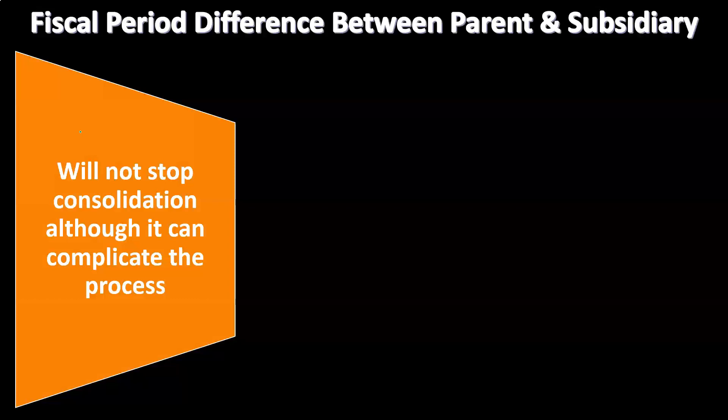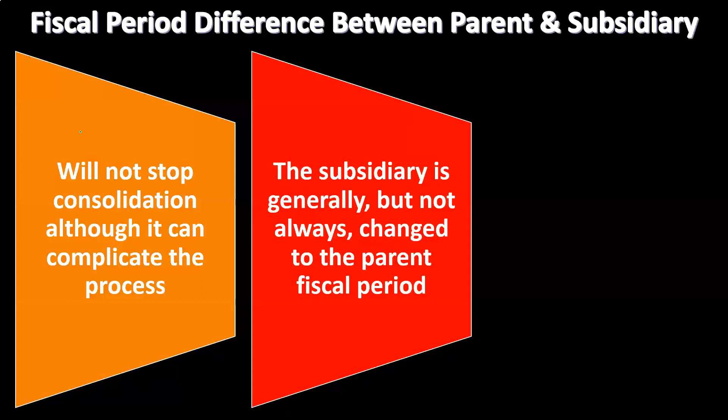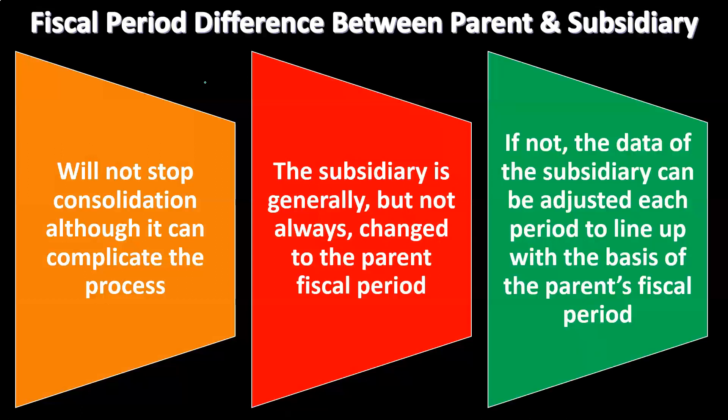We still do the consolidation in accordance with regulations even with differing fiscal periods. The subsidiary is generally — but not always — changed to match the parent's fiscal period, which simplifies the process. If that's not done, perhaps because it's beneficial to report the subsidiary on a different period, then the subsidiary's data can be adjusted each period to align with the parent's fiscal period. That would essentially require running books on two different fiscal period schedules, which is more difficult but can be accommodated.